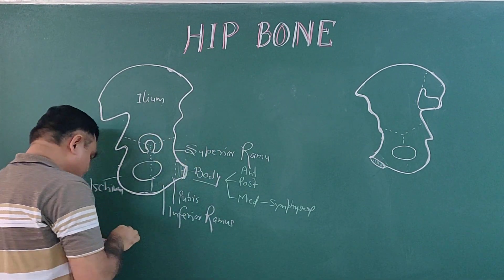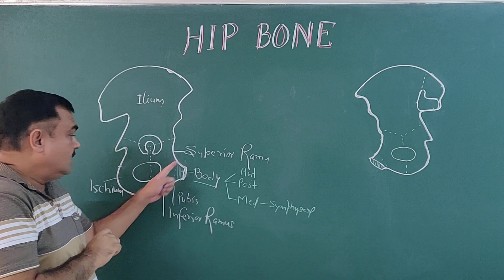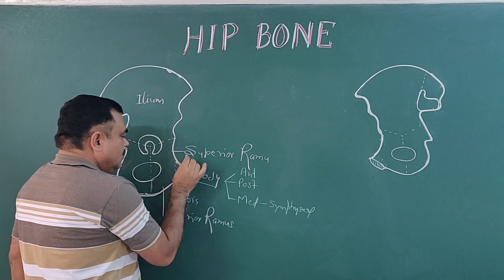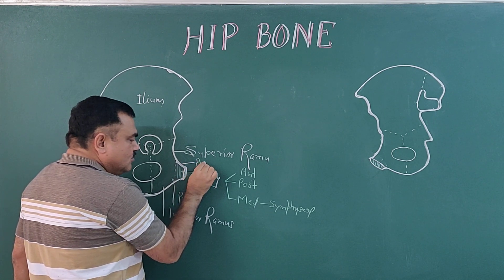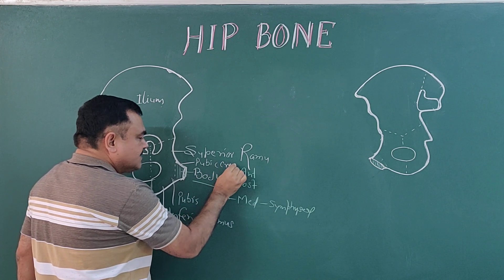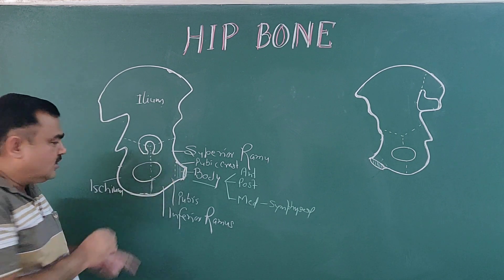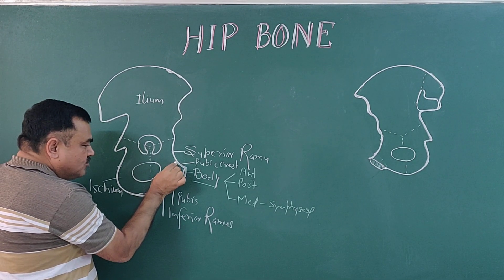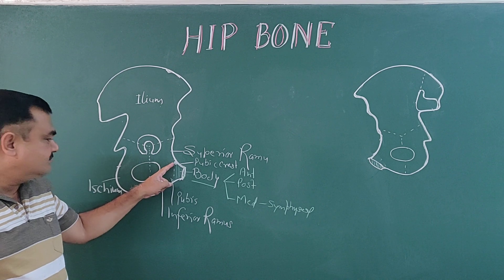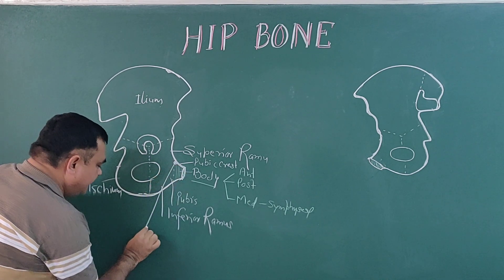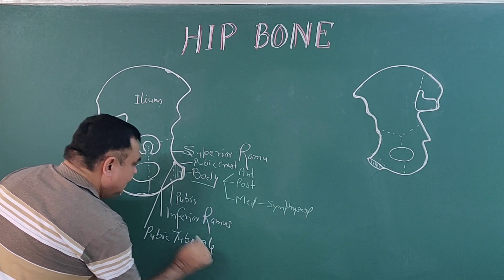Now the borders. Here you can see the upper border — this is the superior border. The superior border is known as the pubic crest; it forms the pubic crest. And here on this superior border there is a tubercle — this is known as the pubic tubercle.